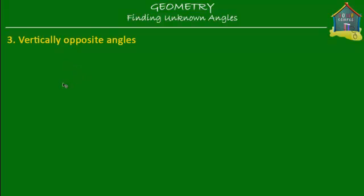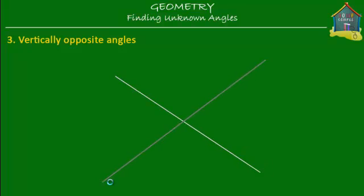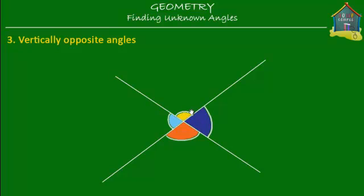What we have now is vertically opposite angles. If we make two lines that cross each other, the vertically opposite angles are: this angle is vertically opposite to this angle over here. So yellow is vertically opposite to orange. And this angle is vertically opposite to this angle — the light blue and dark blue are vertically opposite to each other. When you cross two lines, these are the opposite angles and these are also the opposite angles.